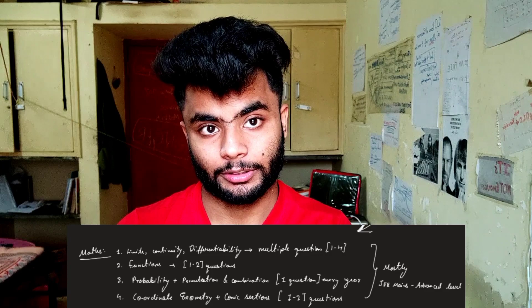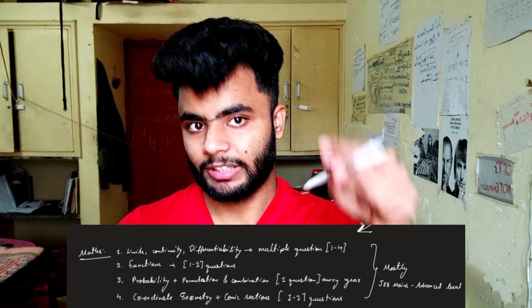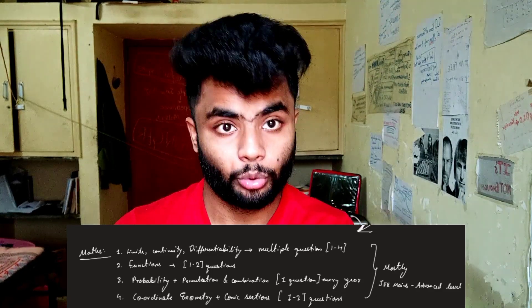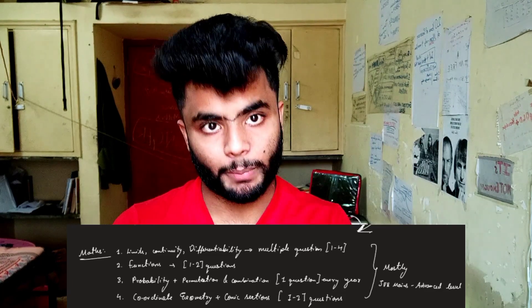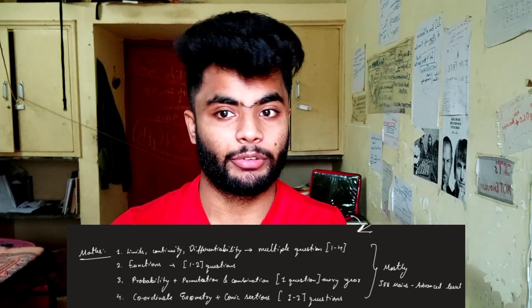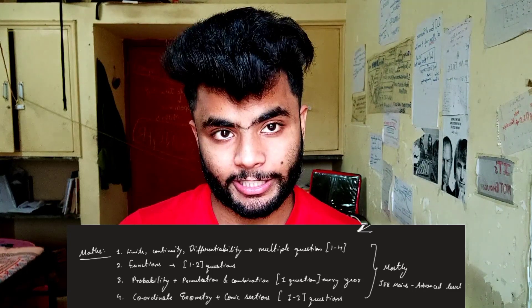For mathematics, one to four questions can come from Limits, Continuity, and Differentiability — I have seen many questions from this topic. Then Functions — the questions are a bit advanced but I have seen one to two questions every year. Then Probability with a mix of Permutation and Combination, because probability questions tend to come at an advanced level — one question every year. Then Coordinate Geometry and Conic Sections — in 2020 and 2019 there were more from Conic Sections as it is trickier and more difficult. This section is also advanced, so people with weak mathematics need a mentor to clear basics.